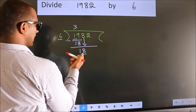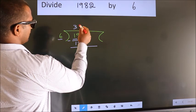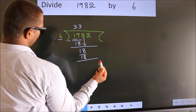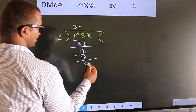When do we get 18? In 6 table. 6 threes, 18. Now we subtract. We get 0.